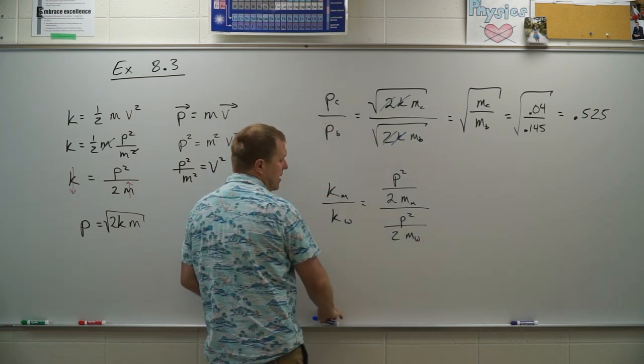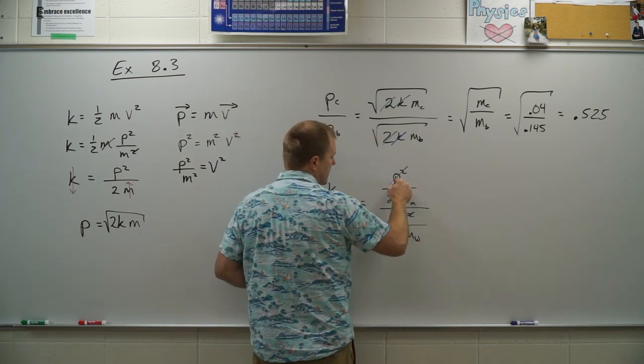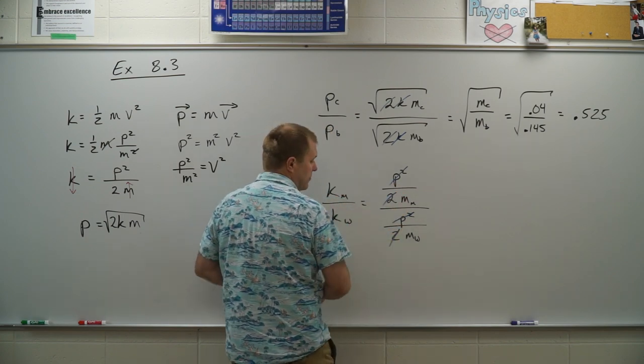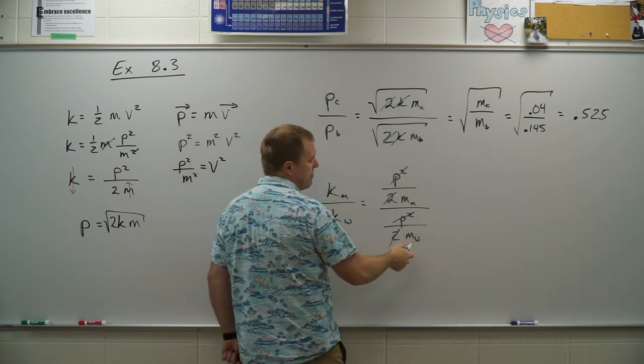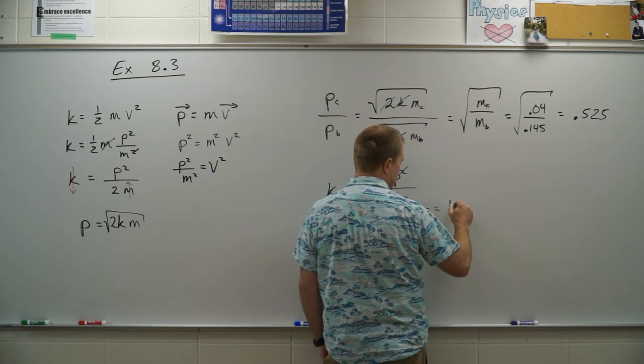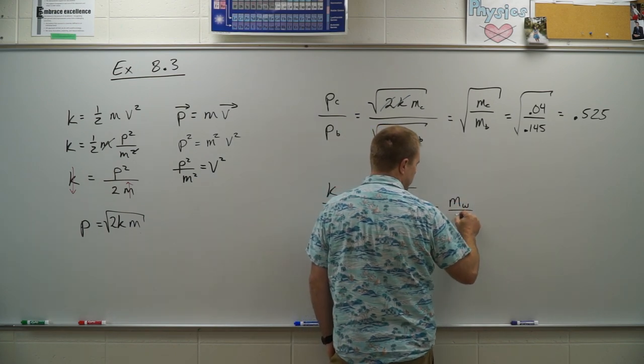Again, they have the same momentum. So my momentum squareds cancel, the twos cancel, and I'm left with a fraction on top, a fraction on the bottom. This comes out to mass of woman divided by mass of man.